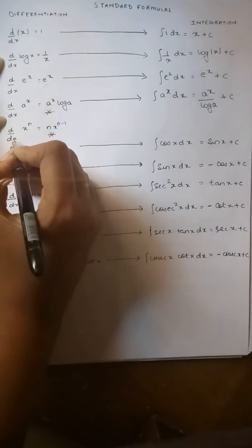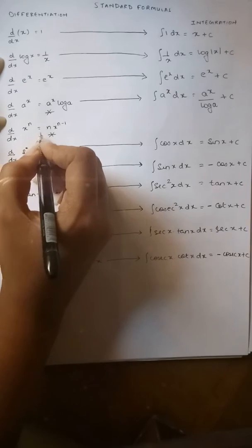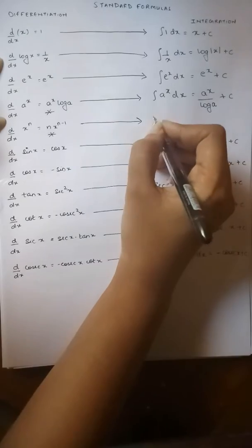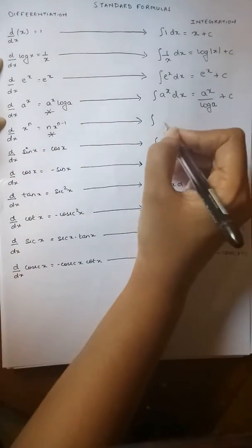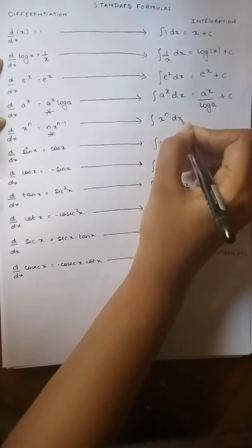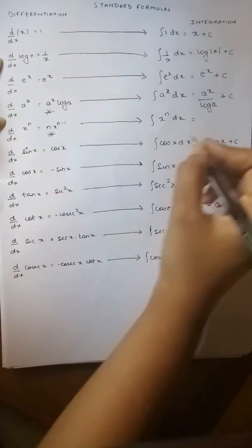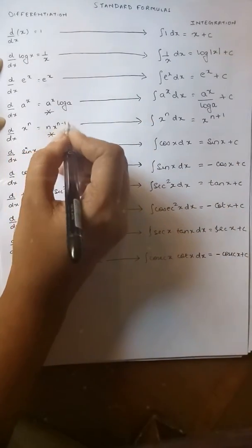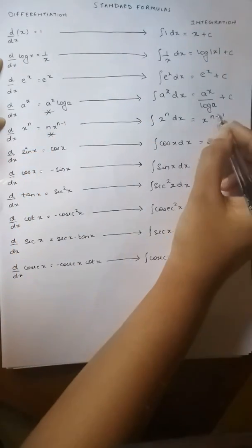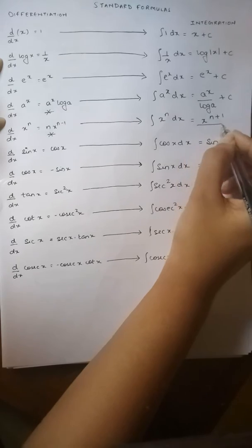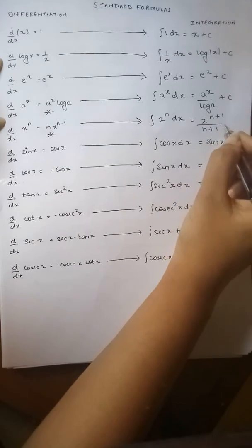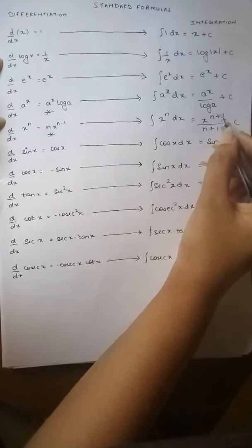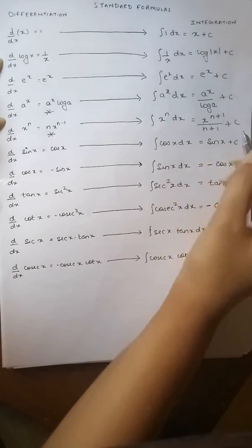Similarly, differentiation of x raised to n gives us n into x raised to n minus 1. Here also, instead of integrating the answer, I am integrating the question again. My answer becomes x raised to n plus 1. In differentiation the degree was subtracted by 1; here my degree is getting added, and the index is getting divided by my answer. So the final answer is x raised to n plus 1 upon n plus 1 plus c.